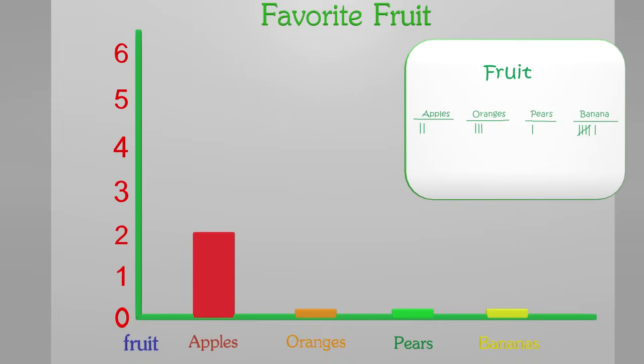Okay, next we have oranges. How many people liked oranges? Good job! Three people liked oranges. So we move the bar up to where the three is.